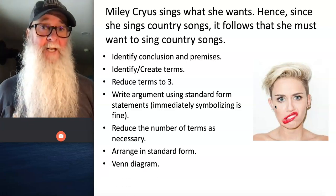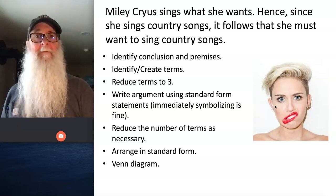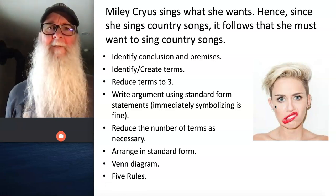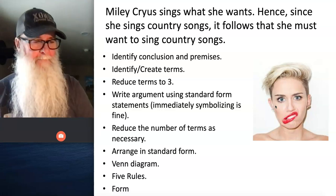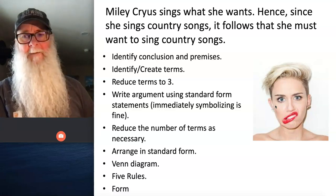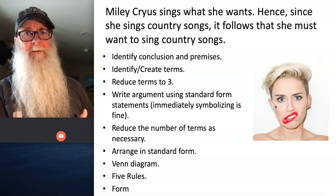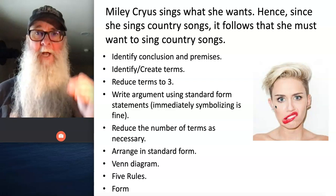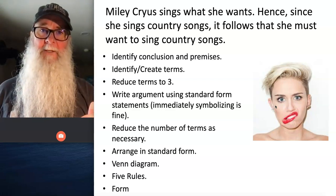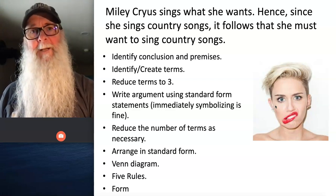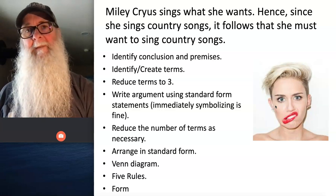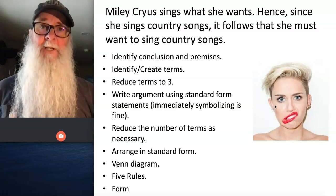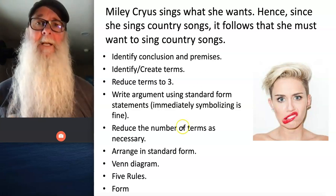Then we're ready to test the argument for validity by creating a Venn diagram. And of course, we always want to check our work by applying the five rules and by determining the argument's form, cross-referencing that with our inventories of valid forms. So here's what you're going to do: don't skip these steps. You need to work through each one in order to get to a final product that reflects whether this argument is valid or invalid. When you're ready to start checking your work, move on to the next lecture.